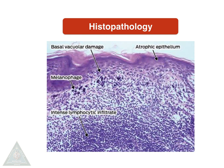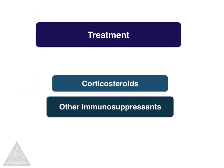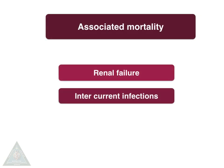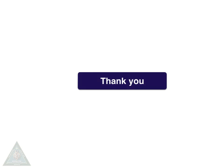Histopathologically, we see an atrophic epithelium with basal vacuolar damage, follicular plugging in the epithelium, and intense lymphocytic infiltrate surrounding blood vessels causing vasculitis. Treatment for this disease is usually corticosteroids and other immunosuppressants, and associated mortality is due to renal failure and intercurrent infections. With that, we end the discussion on SLE. Thank you.